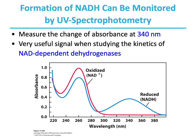Formation of NADH can be monitored by UV spectrophotometry. We measure the change of absorbance at 340 nanometers. NADH, the reduced form of NAD, has a strong absorbance at 340 nanometers, whereas NAD+, the oxidized form, does not have any absorbance there. Both NADH and NAD+ have absorbance at 260 nanometers. This property of NADH can be used to study enzymes like NAD-dependent dehydrogenases.